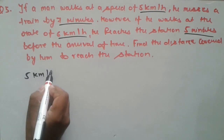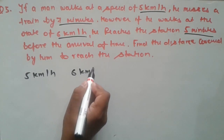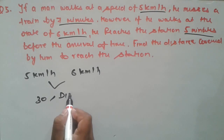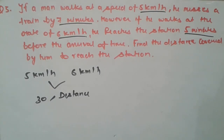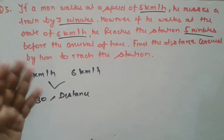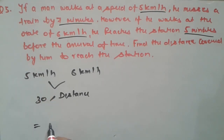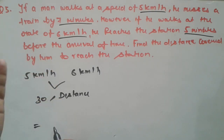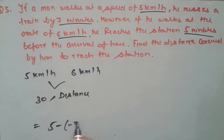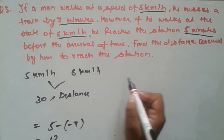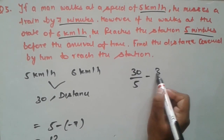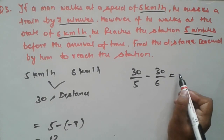Speeds are given as 5 km/h and 6 km/h. If we take the LCM of 5 and 6, we get 30, and we assume this number as the total distance. The difference in time when he travels at different speeds: at 5 km/h he is 7 minutes late and at 6 km/h he is 5 minutes early. So the total difference is 5 − (−7) = 12 minutes. Distance is 30; travelling at 5 and then at 6 km/h gives a time difference of 12 minutes.